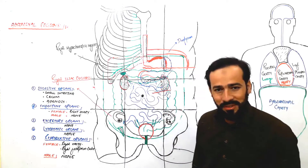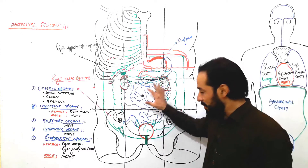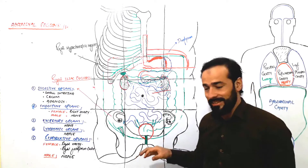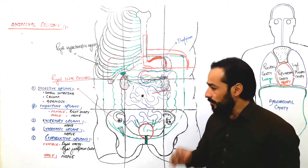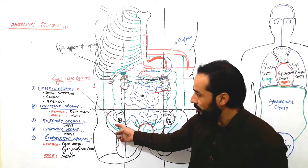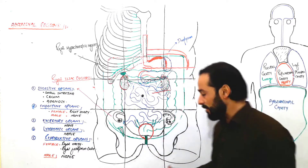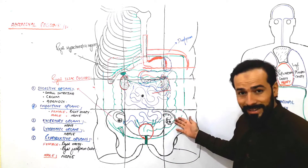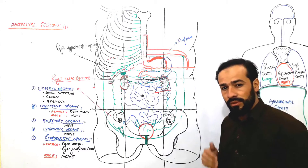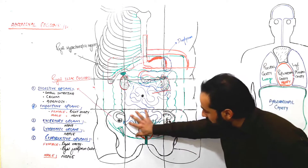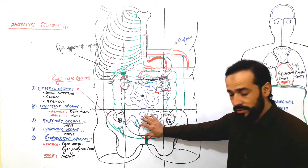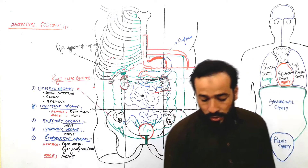Hello my dear friends, welcome back to this last lecture regarding the organs present in the human abdominal regions. Up to now we have covered about eight regions of the abdomen and their organs very specifically. We will give the links of those videos in the description of this video. The last region remaining is called the hypogastric region, so let's move forward and see which structures can be found there.